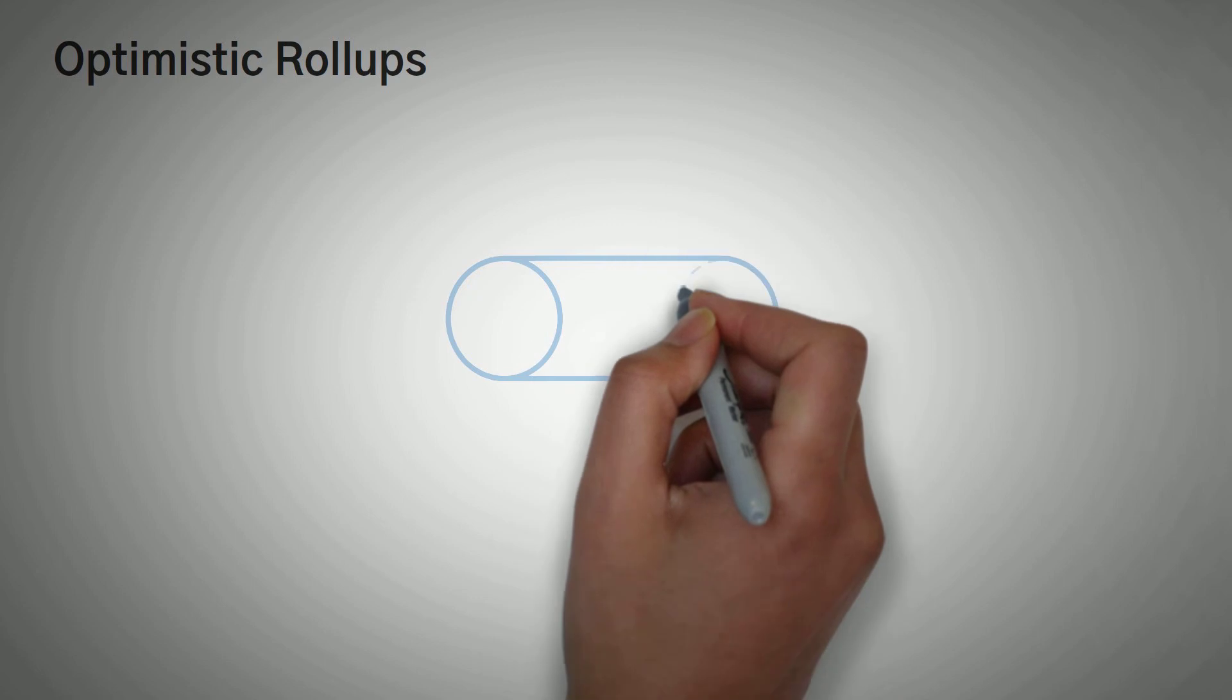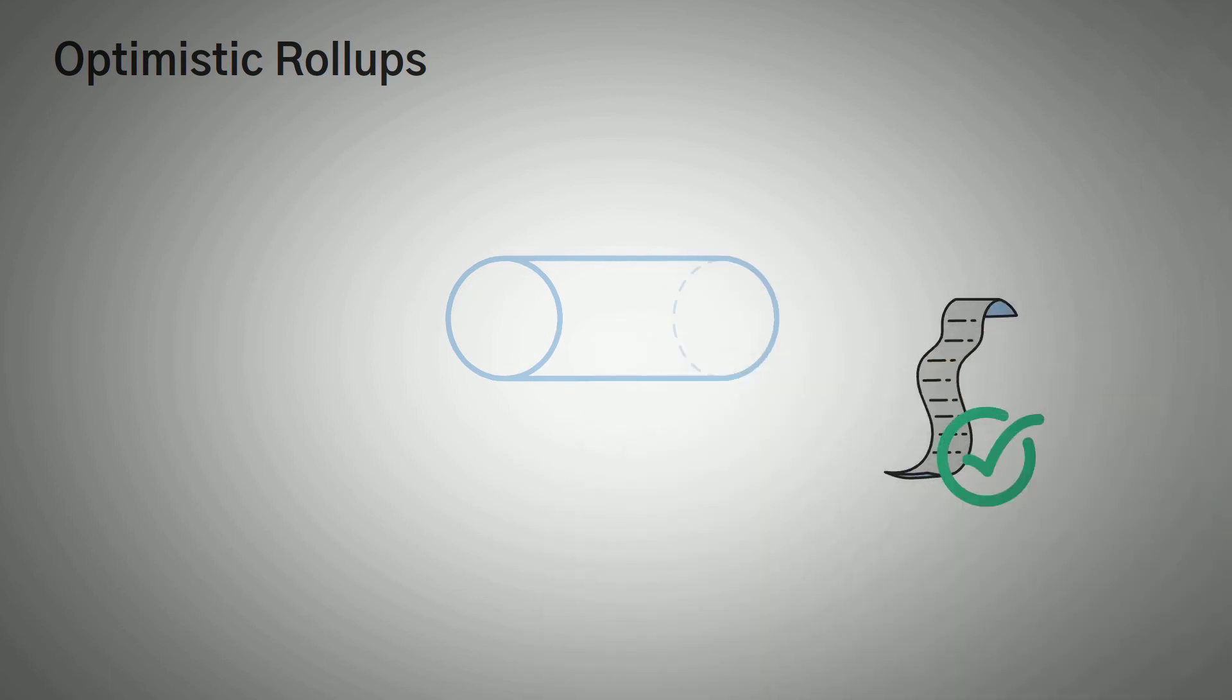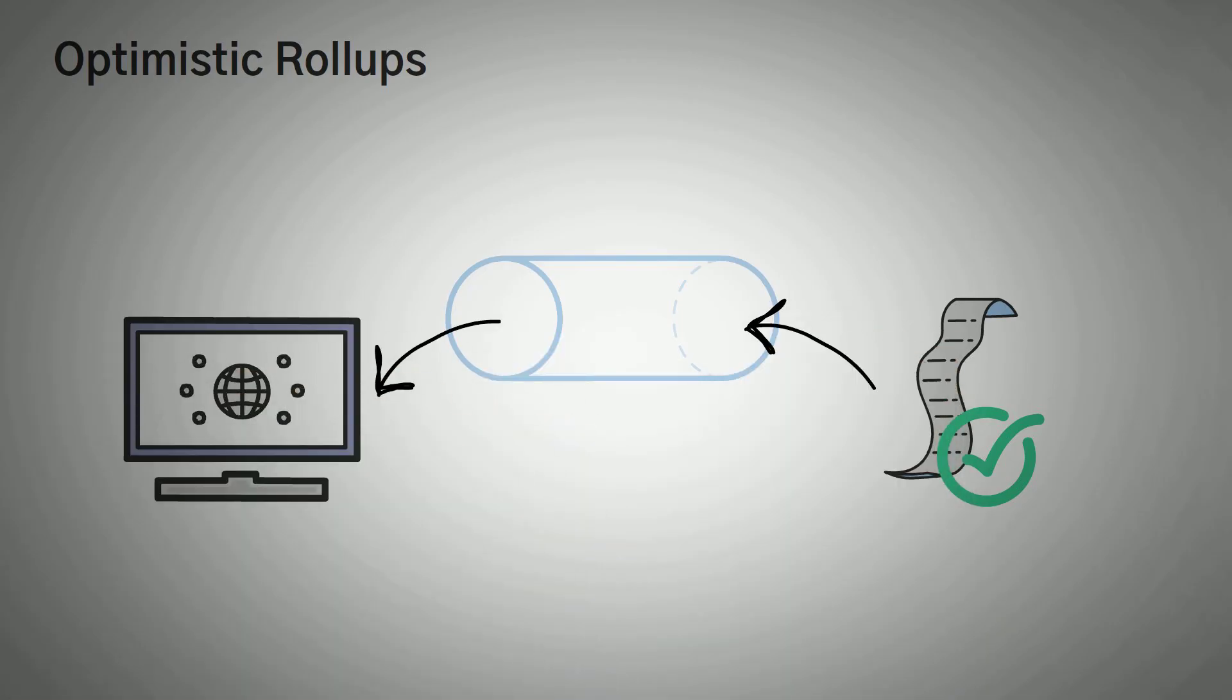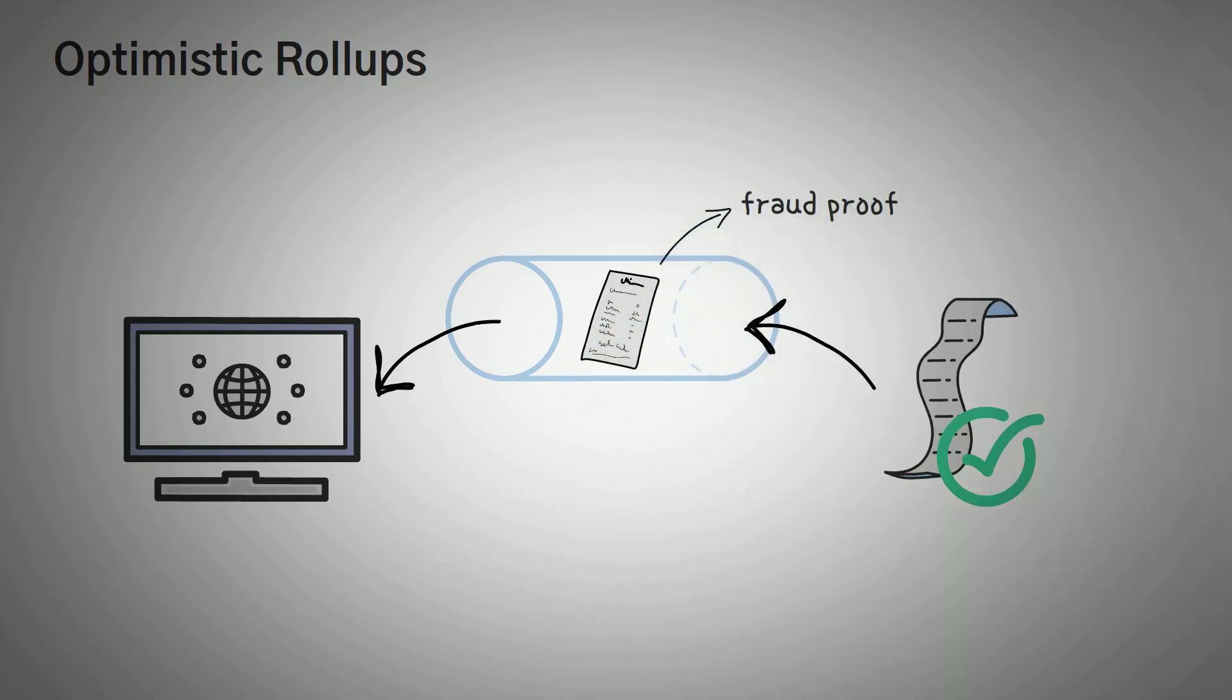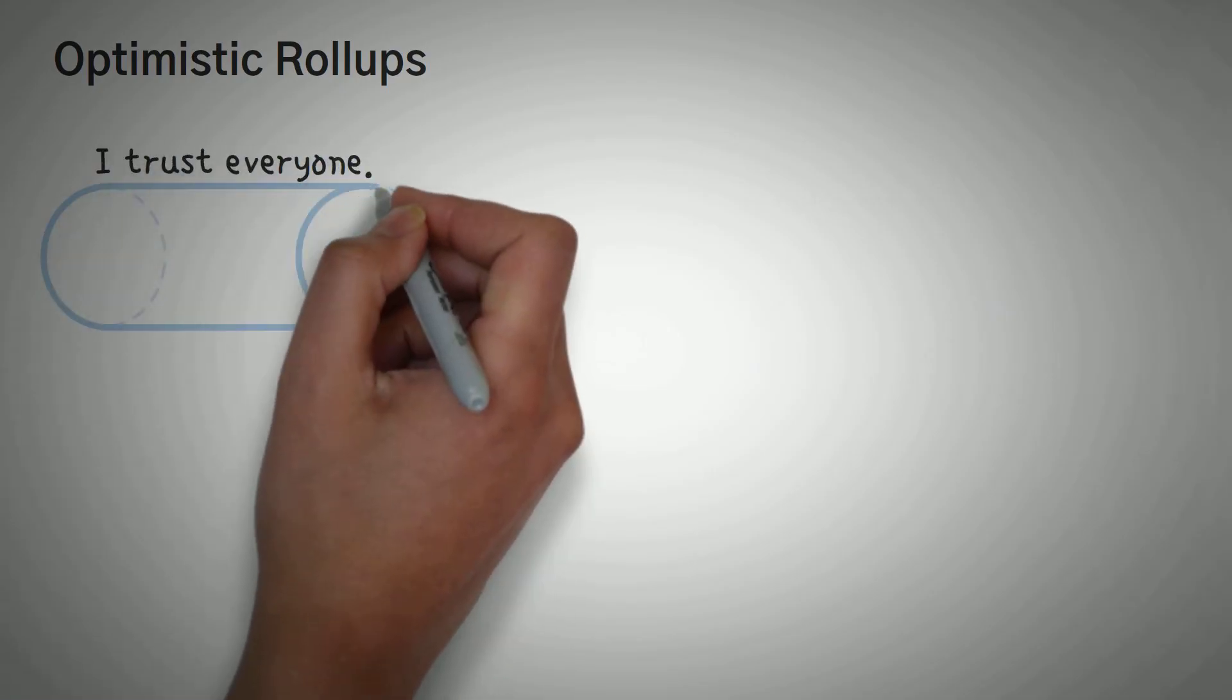Next up, we have optimistic rollups. Optimistic rollups will actually assume transactions are good and valid by default. This is why they are called optimistic, and they approve them all to the main Ethereum chain. Instead of using something called the validity proof, which is like a proof of work version for the rollup, optimistic rollups use a fraud proof, but only when they're challenged. In short, the optimistic rollups assume everyone is telling the truth.